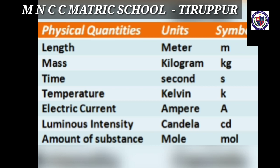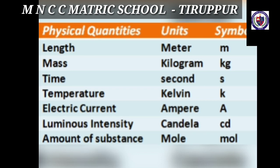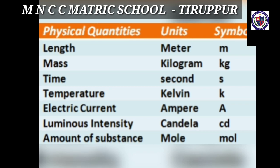We have already heard about words like weight, kilogram, liters, milliliters, kilometers, etc. We measure many things such as weight of fruits, vegetables, and food grains; volume of liquids; temperature of the body; and speed of vehicles. Quantities such as mass, weight, distance, temperature, and volume are called physical quantities.